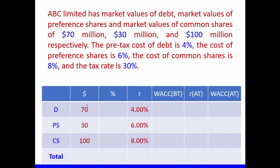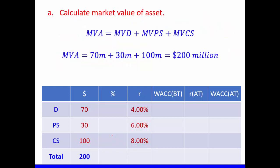Let's start with the variables. We have the market value of debt, market value of preference shares, market value of common shares, pre-tax cost of debt, cost of preference share, and cost of common share. Remember that for equity — both preference shares and common shares — the cost is not affected by tax. The market value of asset equals market value of debt plus market value of equity. Since equity is composed of preference shares and common shares, we get: 70 million + 30 million + 100 million = 200 million dollars.